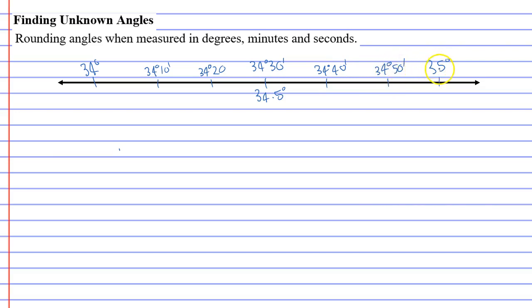And then the 35 degrees is representative of 34 degrees and 60 minutes because there are 60 minutes in a degree.